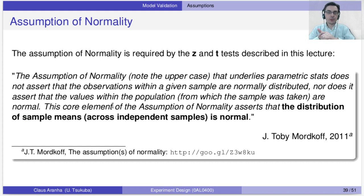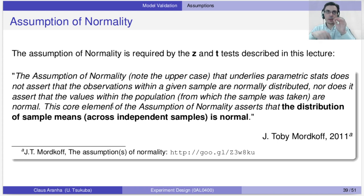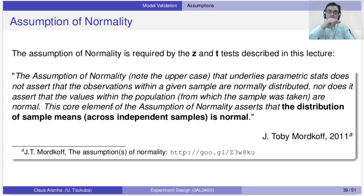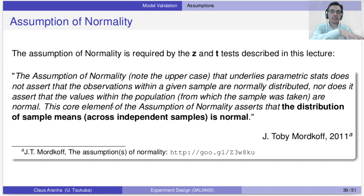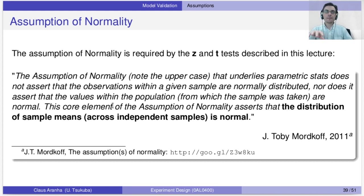The assumption of normality does not mean that the individual observations of one sample are normally distributed, or even that the entire population is. The idea is that the distribution of the sample means is normal. As we saw last class, the distribution of sample means will be normal in many cases if it follows the Central Limit Theorem (CLT). To guarantee the normality assumption, it's usually enough to make sure the CLT is working for your experiment.